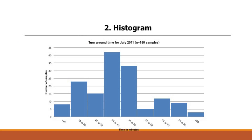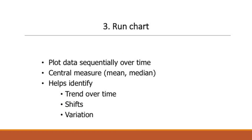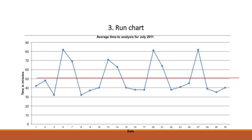Another way we could look at the data would be a histogram of the same data. A third way to consider is a run chart, where we plot the data sequentially over time, identify the central measure using either the mean or the median, and this will help us identify trends over time, shifts, and variation. This is what it looks like when we plot our data over time — it gives us a very different look at our data than using descriptive statistics or the histogram.